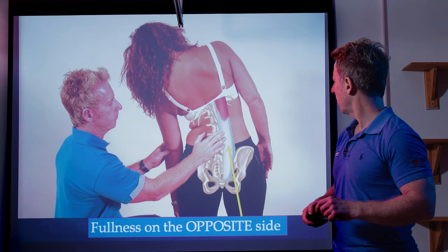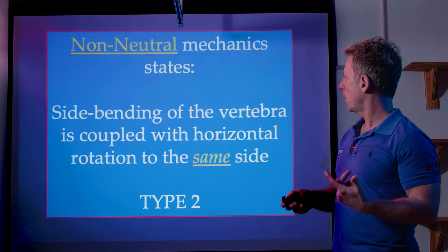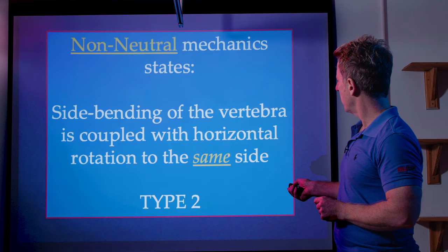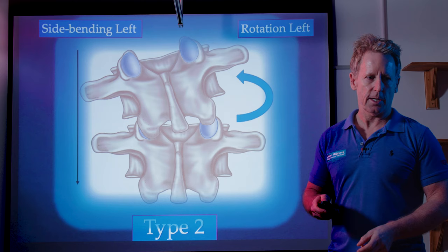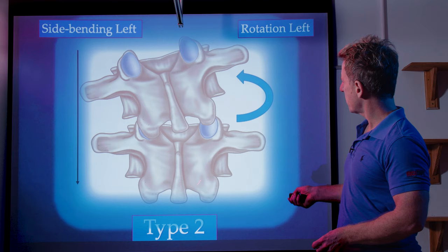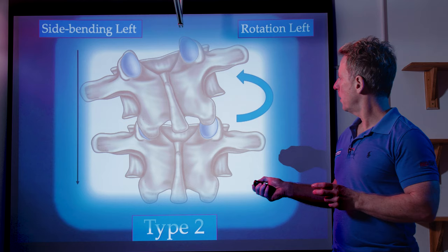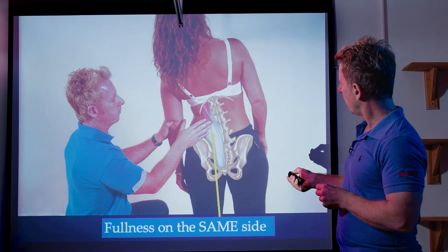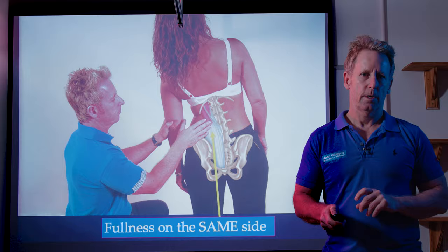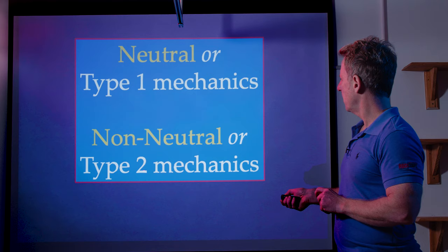Let's look at Type 2 — non-neutral mechanics. Type 2 states that side bending of the vertebra is coupled with a horizontal rotation to the same side. So side bend to the right, the vertebra rotates to the right. Type 2 is also known as Principle 2 or Law 2. In this case, side bending to the left results in rotation to the same side — this occurs when the person is in extension, or in flexion combined with side bending. When you palpate the patient, the fullness is on the same side rather than the opposite side as in Type 1, indicating a Type 2 dysfunction. Neutral mechanics is Type 1; non-neutral mechanics is Type 2.